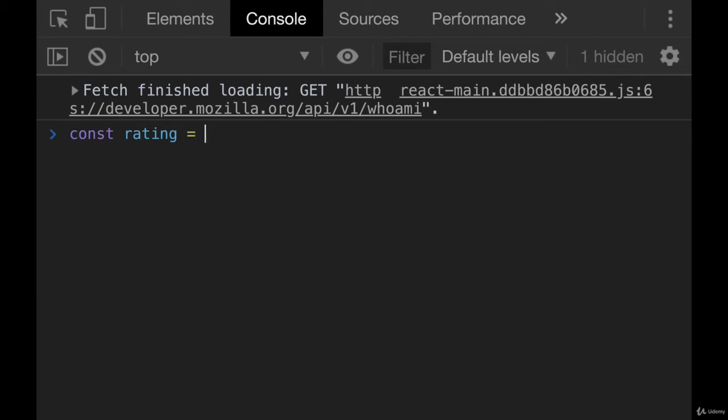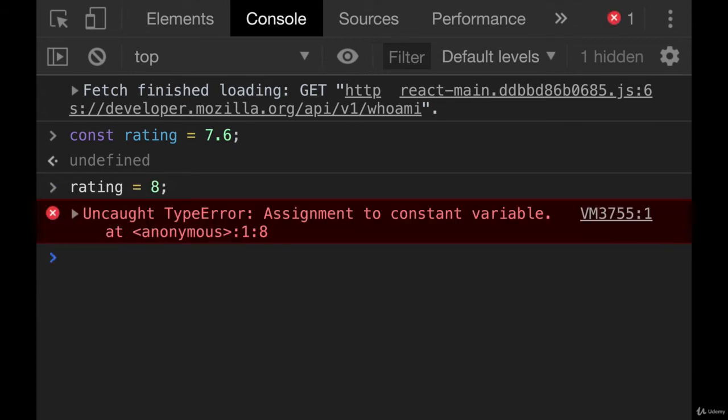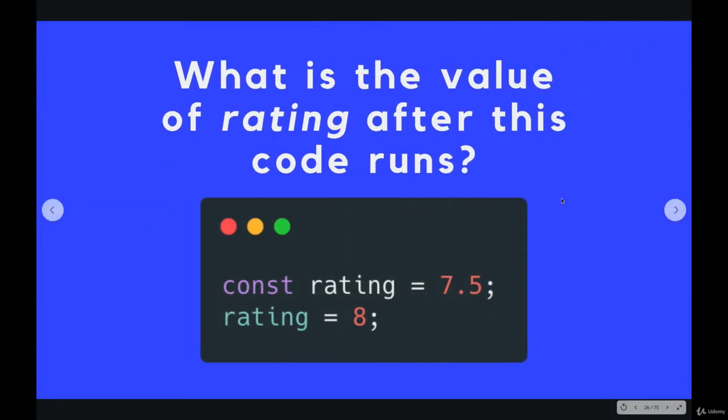So if we tested it out, let's do const rating equals 7.5. 7.6, it doesn't matter. And then rating equals 8 now. We get an error. Assignment to constant variable. So we do get an error. But the question was, what is the value of rating? It's still 7.6. We can't change it. So that's the answer to that one.